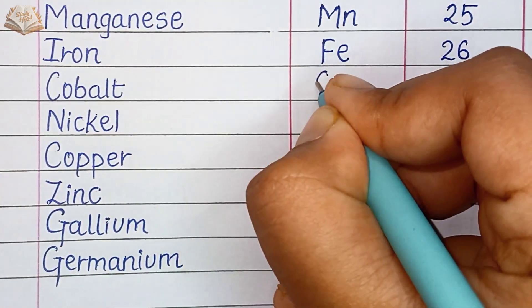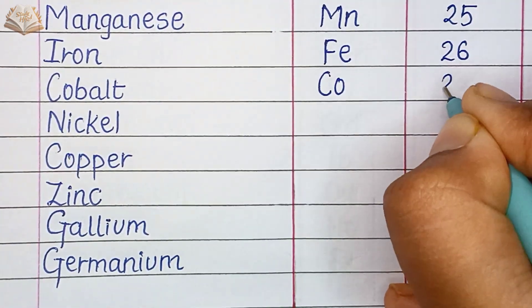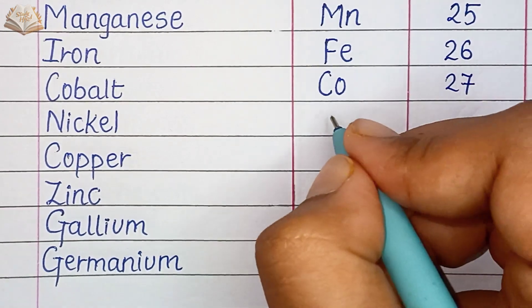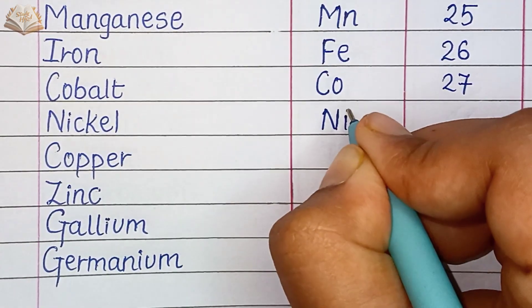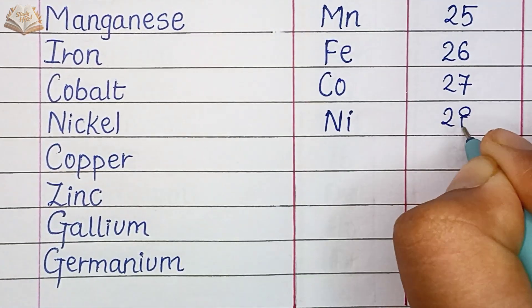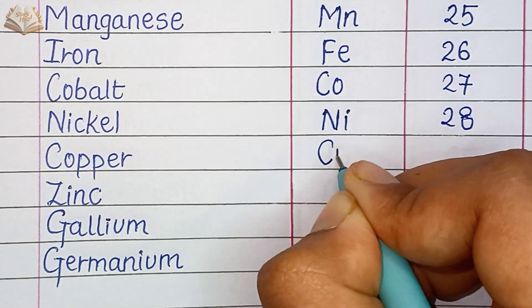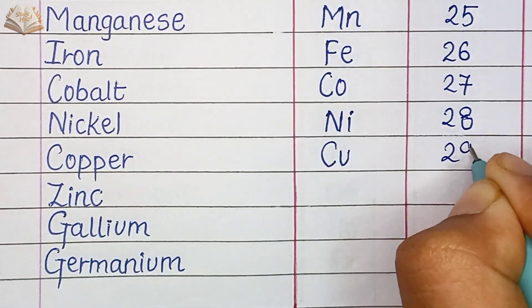Cobalt, CO, atomic number 27. Nickel, Ni, atomic number 28. Copper, Cu, atomic number 29.